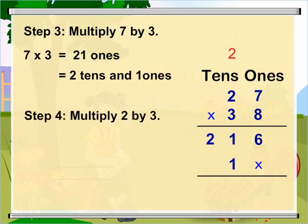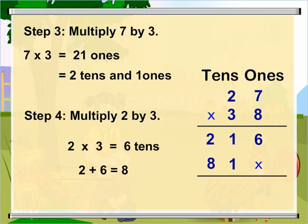Now, multiply 2 tens by 3, which is equal to 6 tens. Now, add the 2 tens that were carried over to 6 tens. That is, 2 tens plus 6 tens is equal to 8 tens.